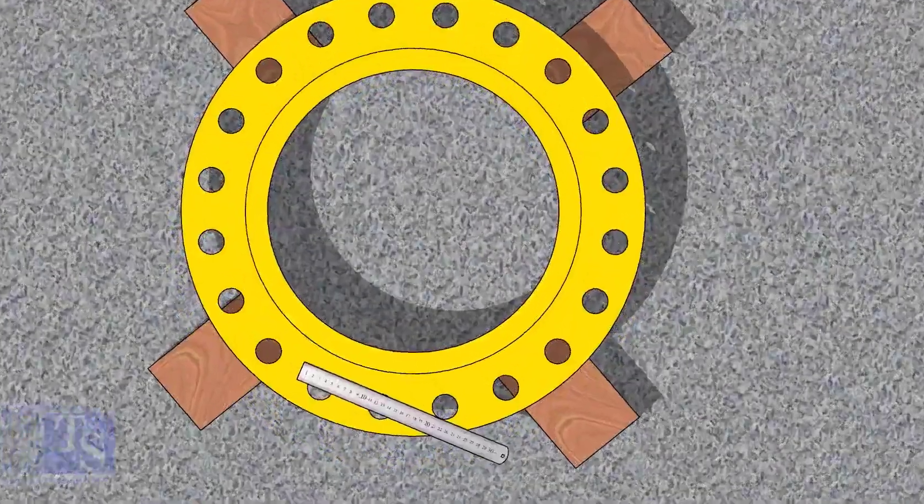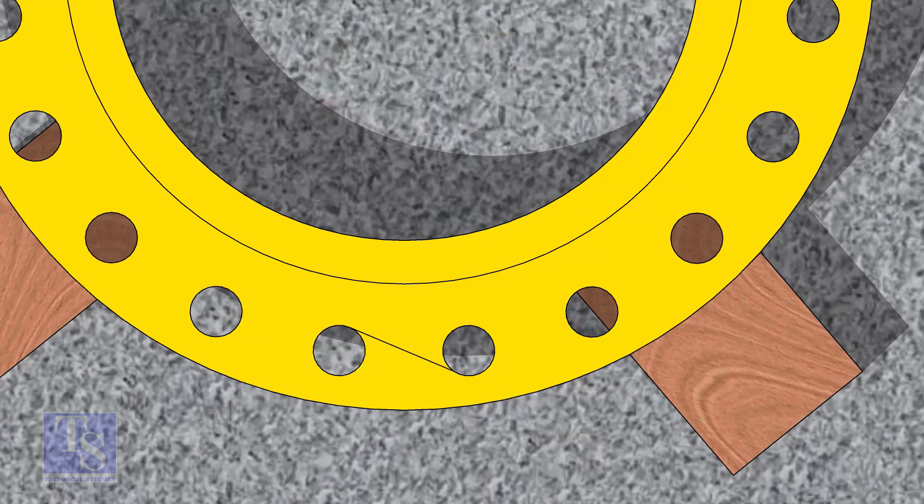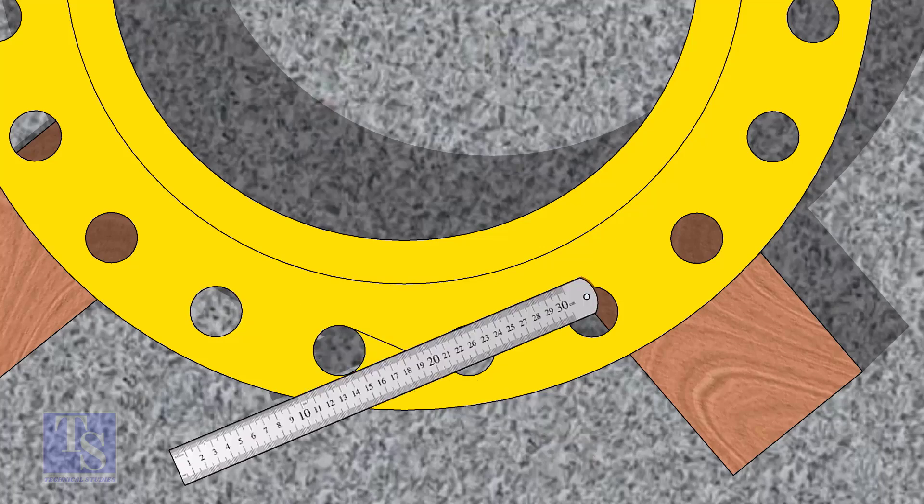Let us mark the center line of the flange. Draw tangential lines of two adjacent holes. The intersection of the lines is the center of these holes.